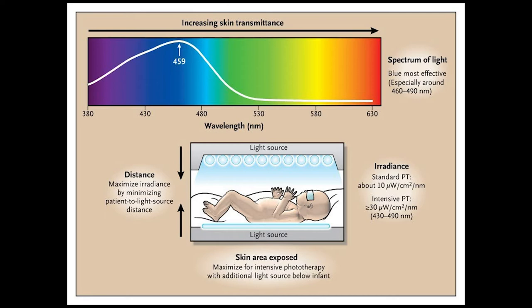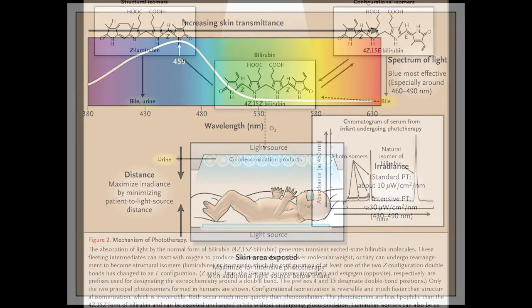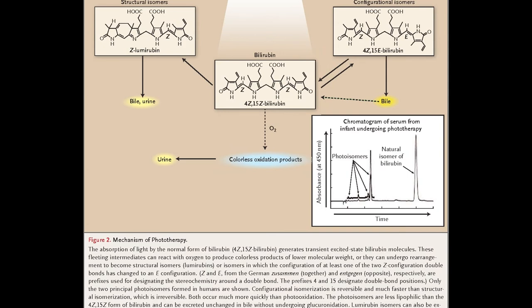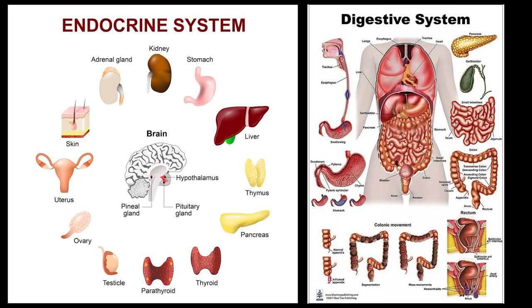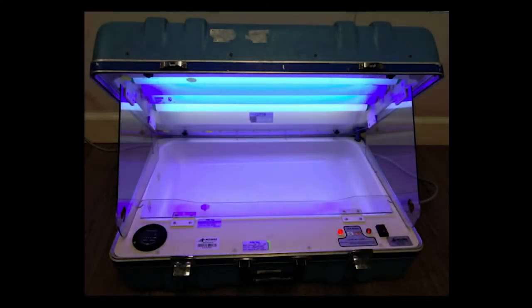Jaundice is treatable in babies using a blue light of a specific wavelength. The blue light interacts with the bilirubin beneath the skin and converts it from a fat-soluble substance into a water-soluble substance. As a water-soluble substance, the excess bilirubin can naturally be filtered out by the body's endocrine and digestive systems.